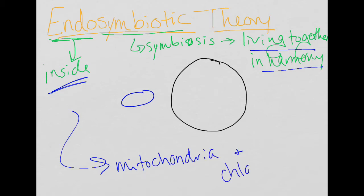and chloroplasts. The theory goes like this: Once upon a time, there was a bacterial cell and another cell.